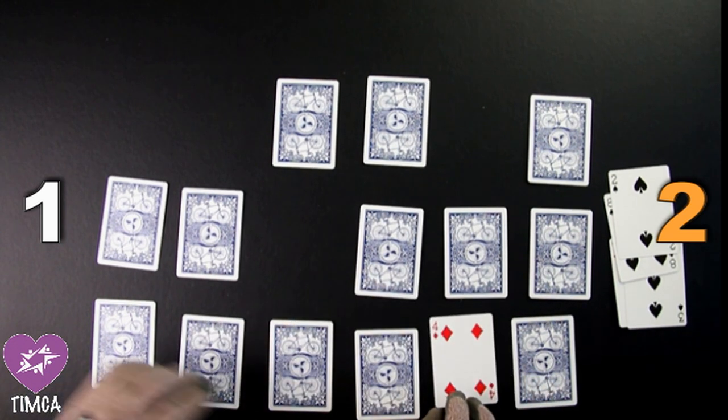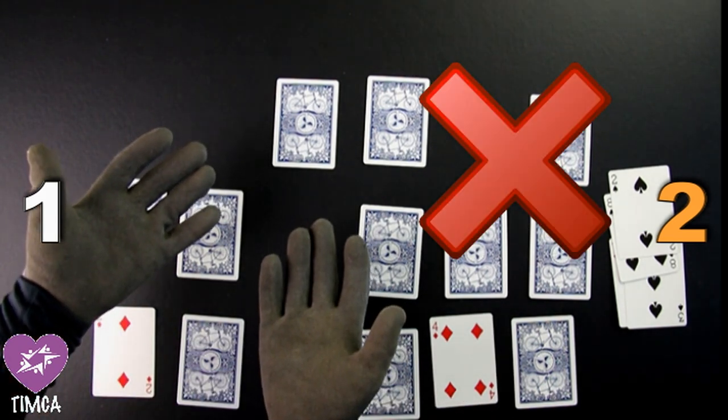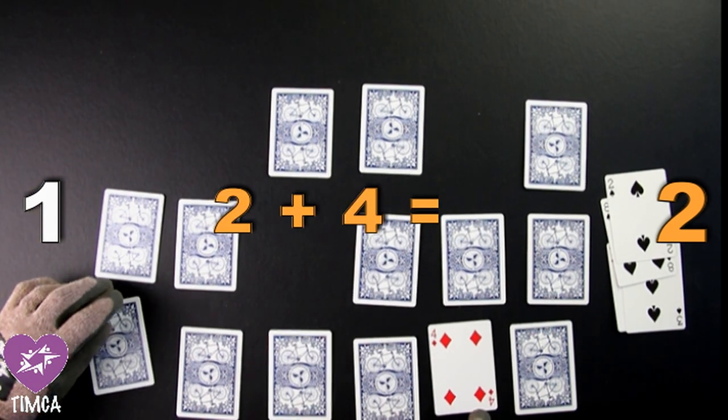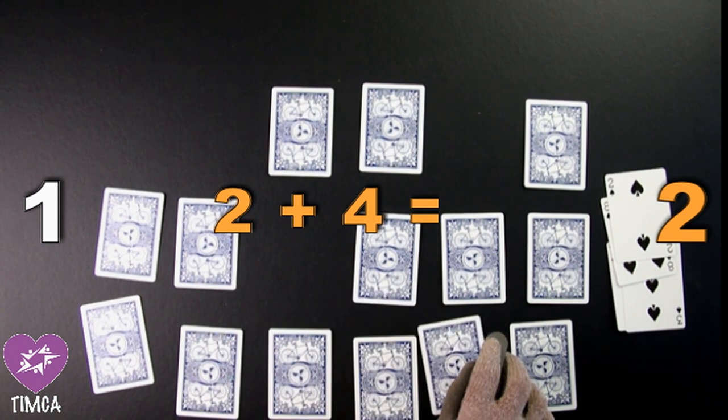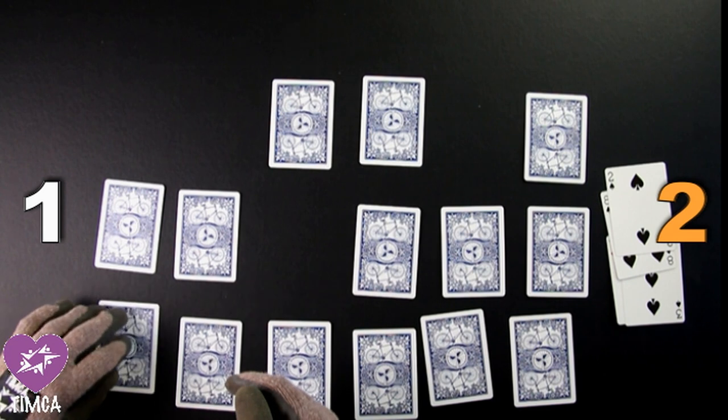Learner 2 selects a 4. Can they find a 6? No, they have found a 2. 2 plus 4 is equal to? Yes, 6. Now, Learner 1 can have another turn.